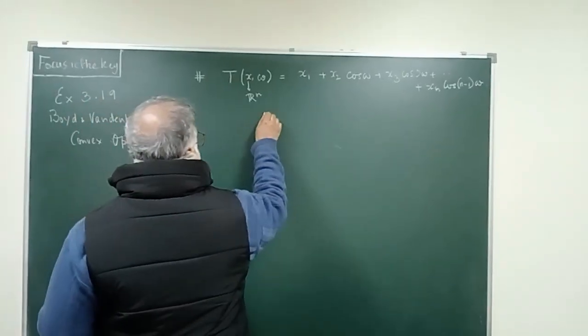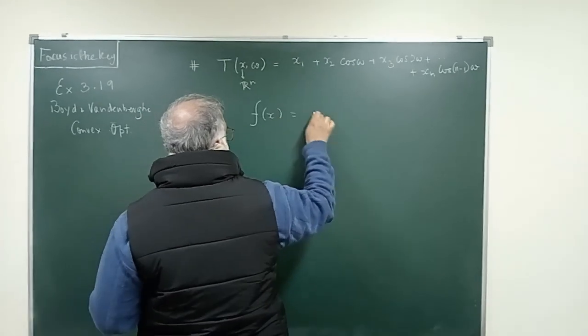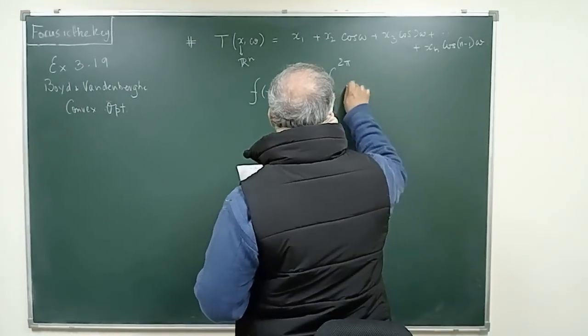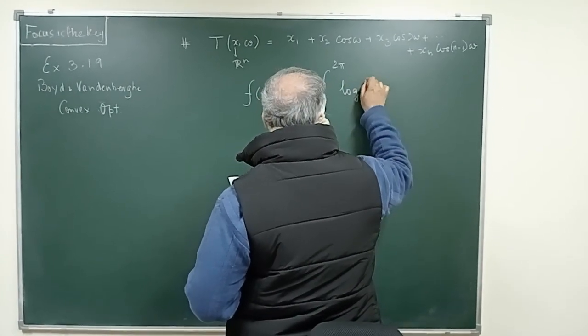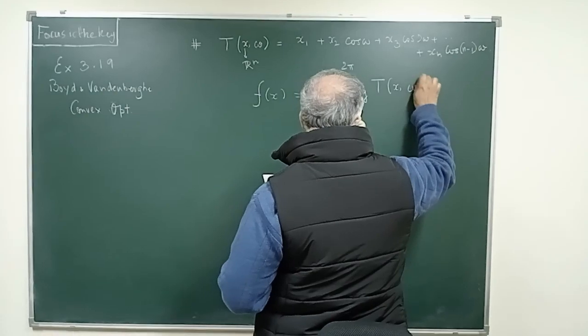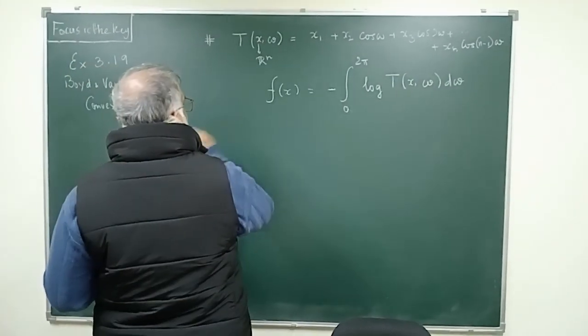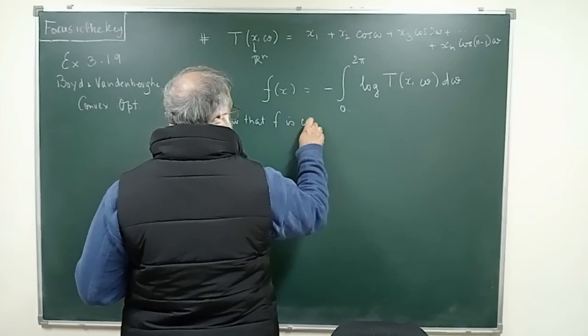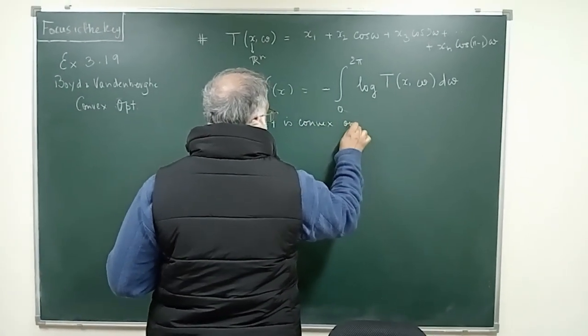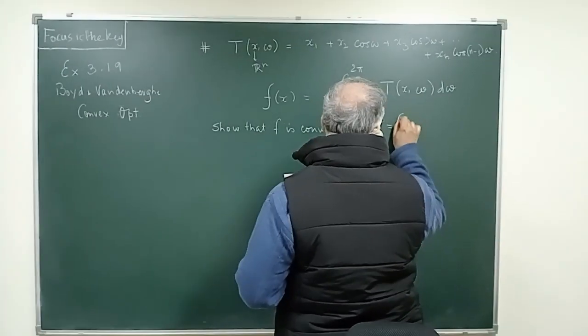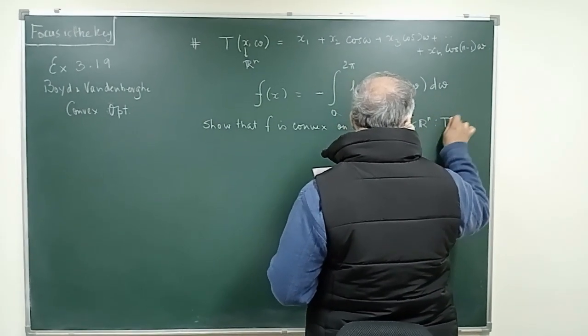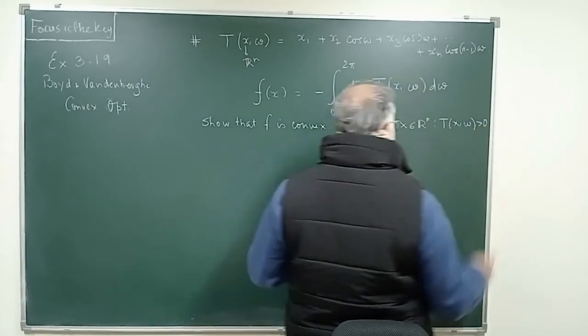Now, it writes a function f depending on x. Here what I am doing is computing the integral where the integrating variable is ω. We are doing log, or log means to the base e, dω. We have to show that f is convex on C, which is the set of all x in R^n such that T(x,ω) is strictly bigger than 0.